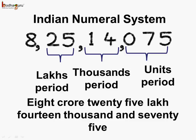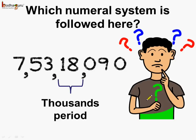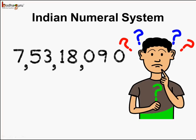So now you know how commas are placed in both the Indian numeral system and the international system. Coming back to our question, can you figure it out now? Which numeral system is being followed here? This is the units period and we get the first comma. The next period is the thousands period, and if you look, there are only two digits in this period, which means it is the Indian numeral system.